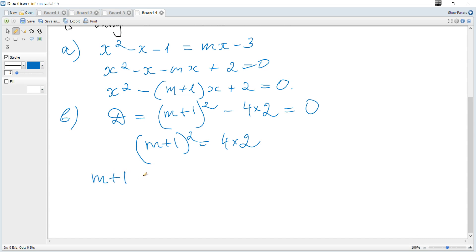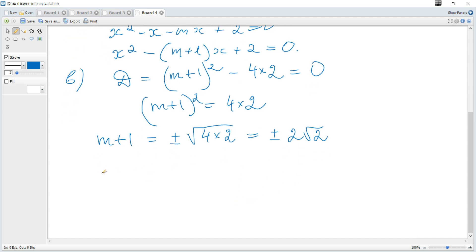Then m plus 1 is plus minus root of 4 times 2, and it's clear that it's plus minus root of 4. It's 2 multiplied by root of 2. Hence m equals negative 1 plus minus 2 times root of 2.